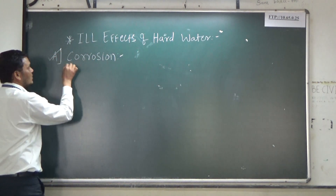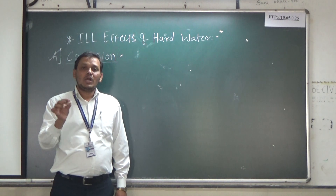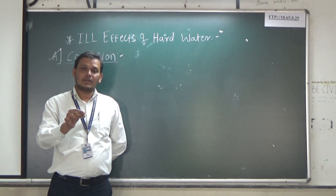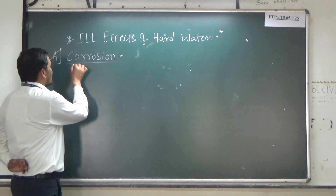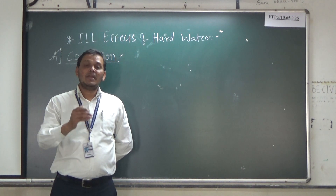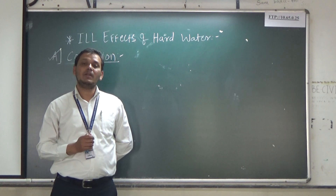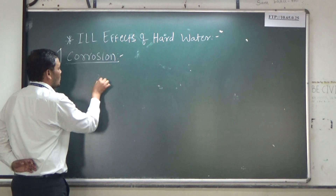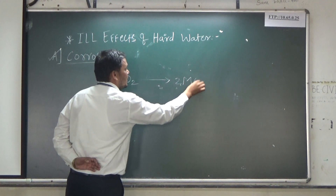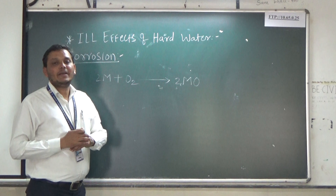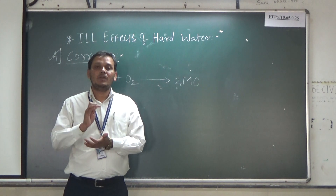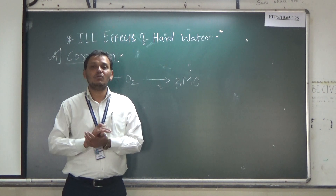The first one is corrosion. After watching this video, you will be able to understand how corrosion affects boiler water and what are its causes. Corrosion means destruction of metal due to chemical or electrochemical reaction. For example, metal plus oxygen leads to formation of a metal oxide film at the top surface of the metal — this is known as corrosion.